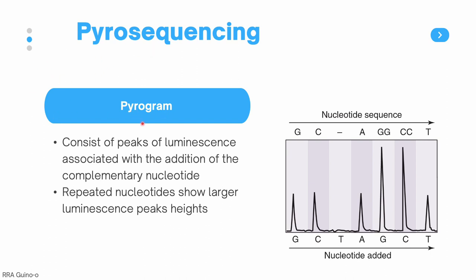Pyrosequencing machines produce pyrograms — a graphical representation of what the machine observed during the reaction. This consists of peaks of luminescence associated with the addition of complementary nucleotides. For example, when the G and C nucleotides were added, luminescence was observed producing a peak, so G and C are added to the sequence. When T was added and no luminescence was observed, no peak is formed and that nucleotide is skipped. Repeated nucleotides show larger luminescence peak heights — for instance, a larger peak for G indicates two Gs in sequence.